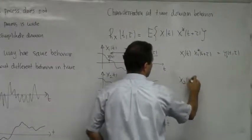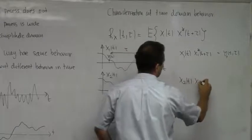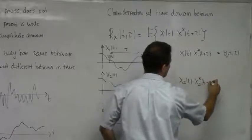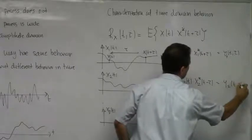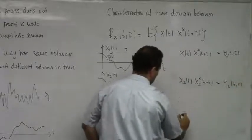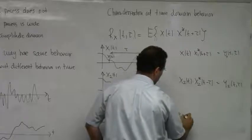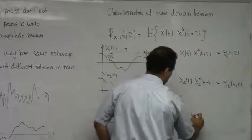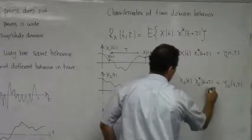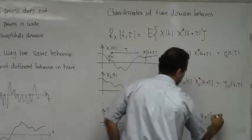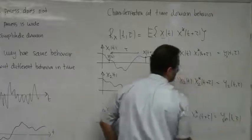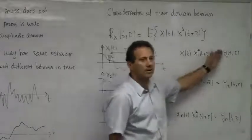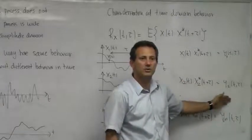Now I do the same here. I get x2(t) times x2 complex conjugate of t plus τ and I call that y2(t, τ). Then xn(t) times xn complex conjugate of t plus τ, and this is yn(t, τ). This is now a new variable that will have its own distribution.